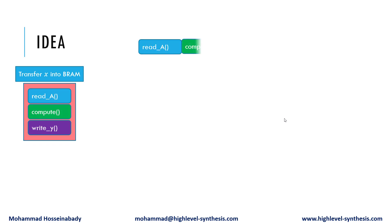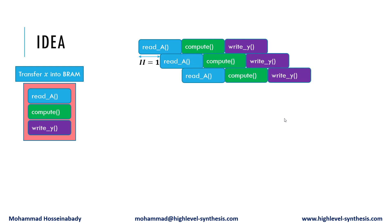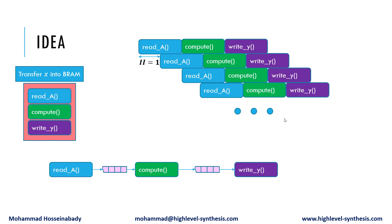These functions will be executed in a dataflow fashion, in which they will be executed in a pipeline scheme with an initiation interval of 1. Two FIFOs provide a kind of streaming data transfer between the three functions. To solve the first issue, we modify the code such that the inner loop encompasses all the statements.